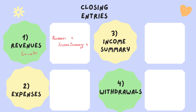The second closing entry is to close expenses. The normal balance for expenses is debit. To close this account, I will credit this account. I'm going to debit income summary. Again, this is not a real account — it's going to help me in that closing process. And I'm going to credit expenses.